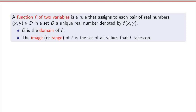Let me now define what a function of more than one variable is mathematically. In this video, we're going to focus on functions of two variables. A function f of two variables is a rule that assigns to each pair of real numbers x and y in a certain set d, a unique real number denoted by f(x, y). We call d the domain of f, and the image or range of f is the set of all values that f takes on.